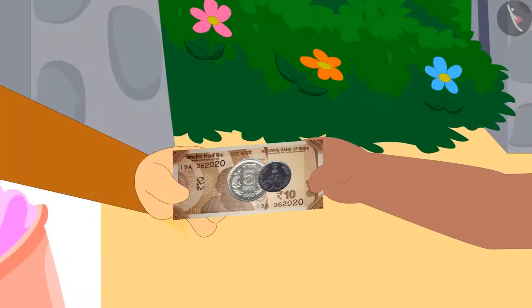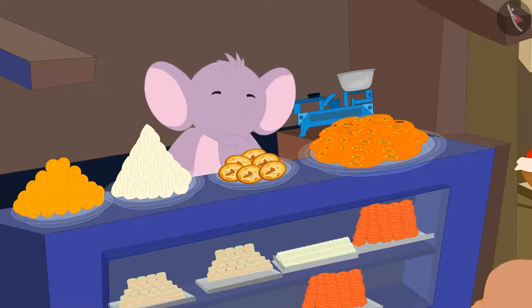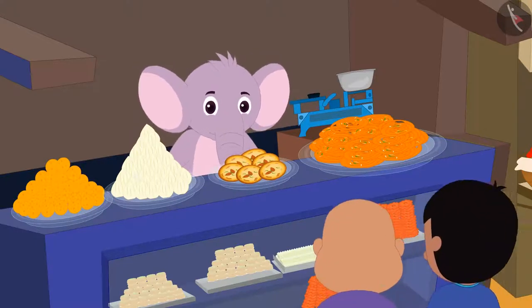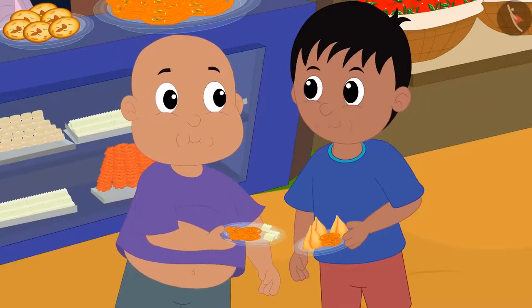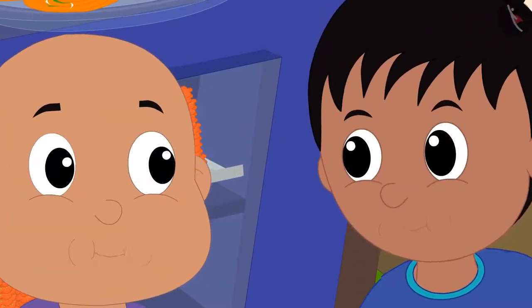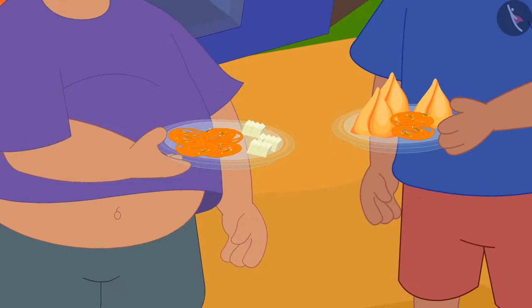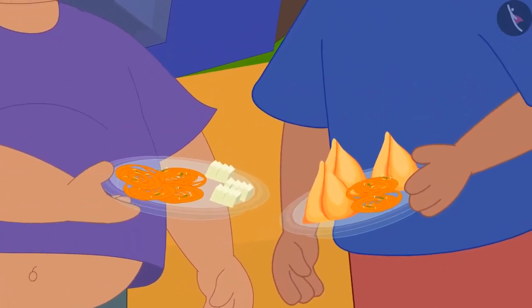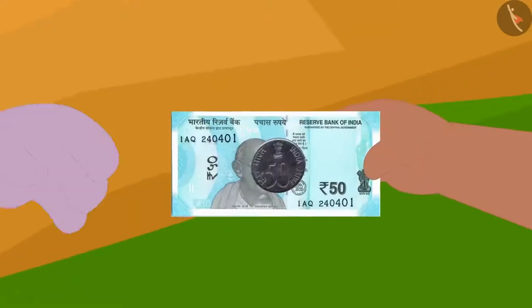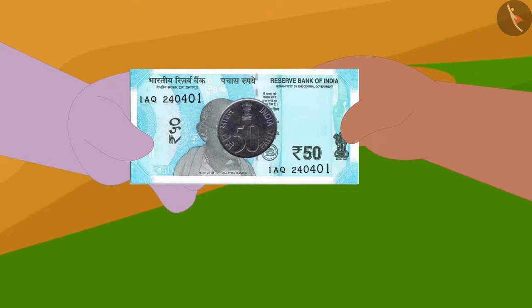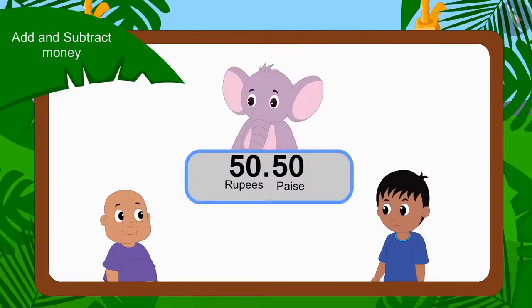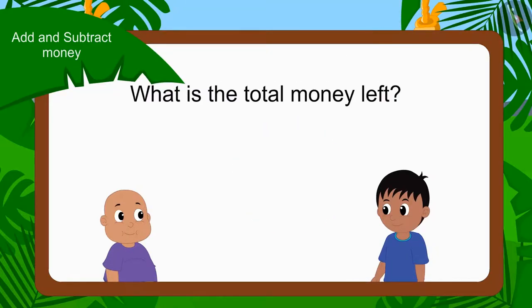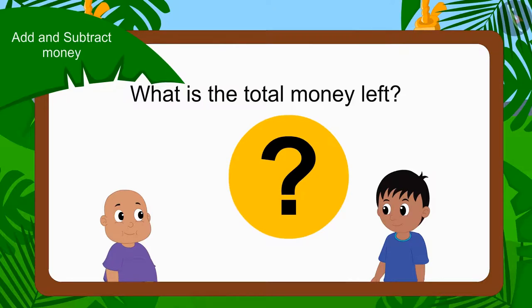He paid Babban for the ice cream and later reached Appu's sweet shop. They ate a stomach full of samosa, jalebi, and barfi. If they gave Appu a total of 50 rupees 50 paise for all the things, can you tell how many rupees are left with both of them now?